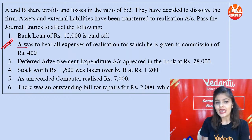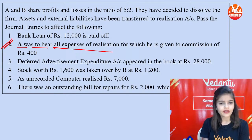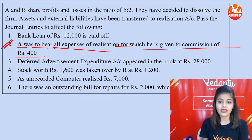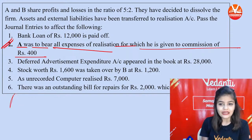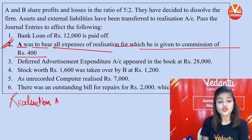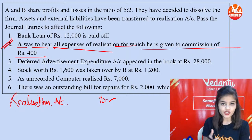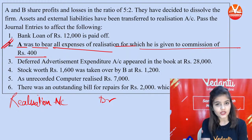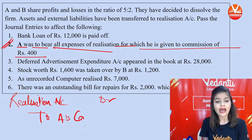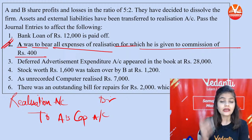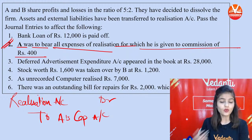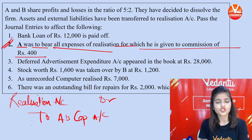Second transaction — A was to bear all expenses of realization, for which he is given a commission of ₹400. The journal entry: Realization Account Debit, because commission is an expense of the firm — at the time of expenses and losses, we debit Realization. To A's Capital Account, because when you give something to the partner, their capital increases, and an increase in capital is always credited.